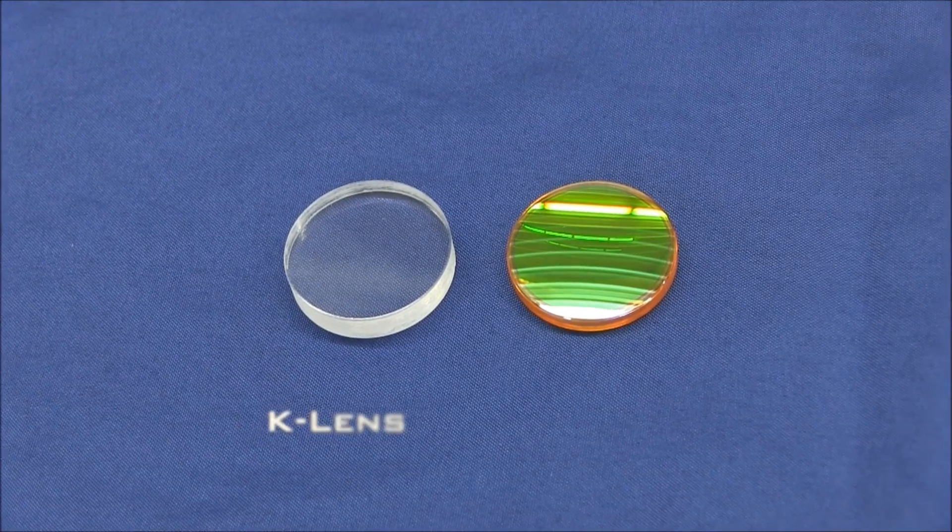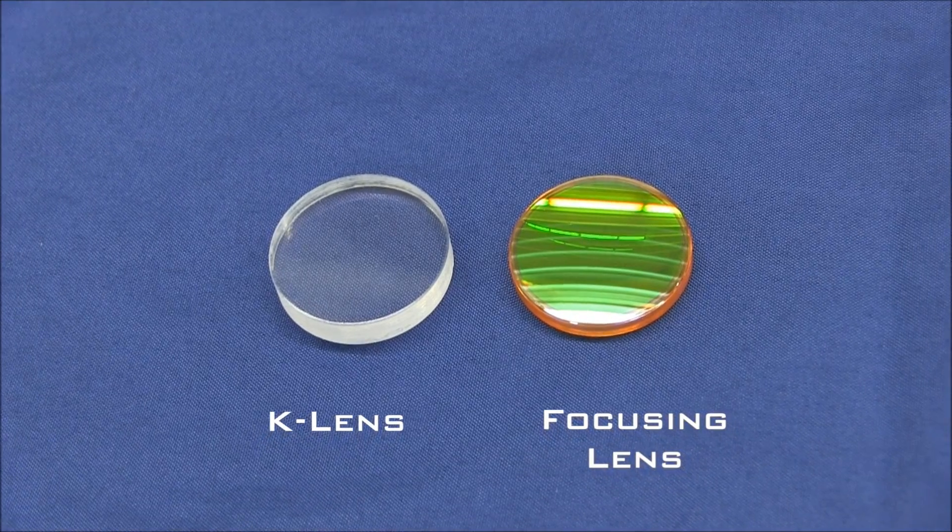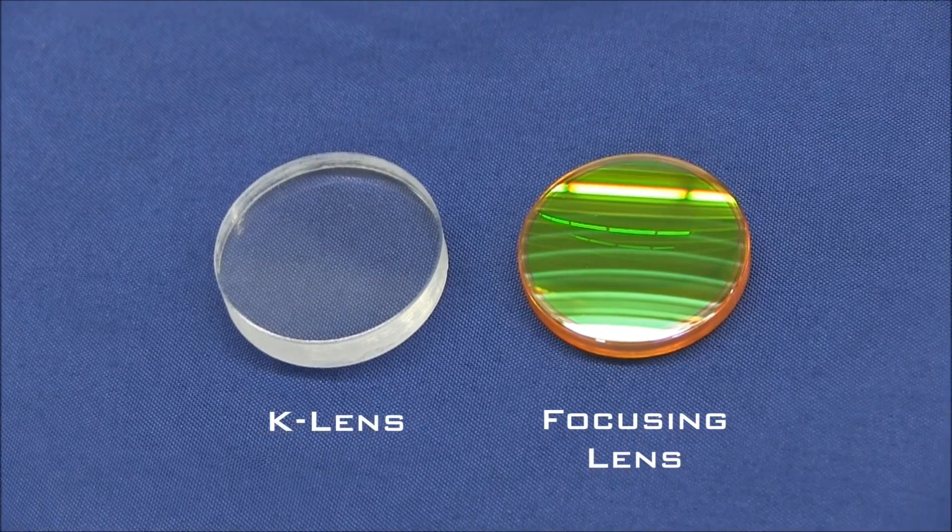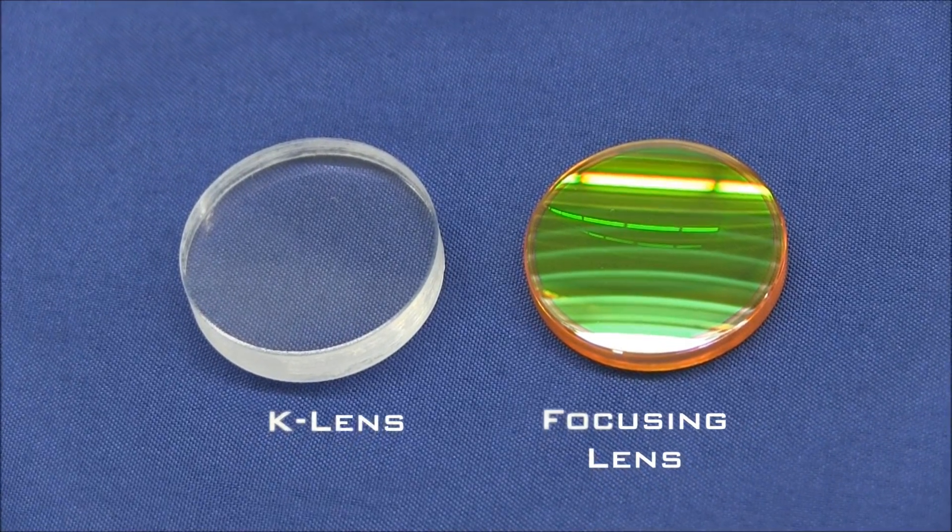A lens protector, known as a K lens, is installed between the focusing lens and the metal being cut, protecting the optic from reflection and pitting. The K lenses are economically priced to allow for daily or weekly replacement.